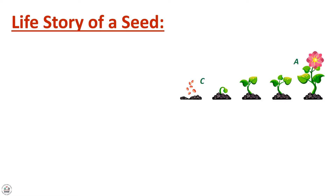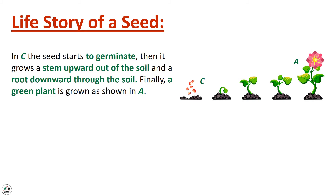Life story of a seed. The figure represents the stages of germination where a bean seed develops into a plant. The seed starts to germinate, then it grows a stem upward out of the soil and a root downward through the soil. Finally, a green plant is grown as shown in the figure.